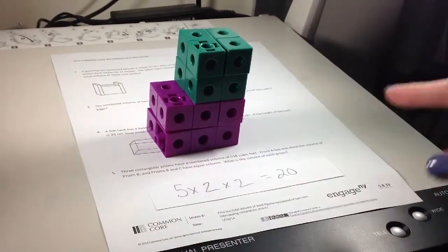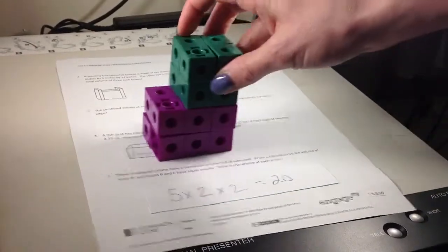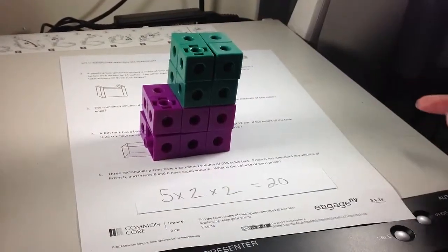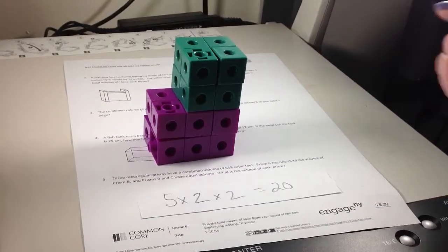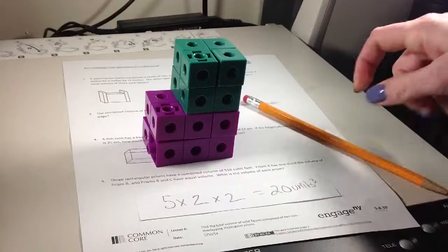However, if I know that this bottom one is 12, and I know the top one is 8, I can add them together. So 12 plus 8 would also give me the 20 units cubed.